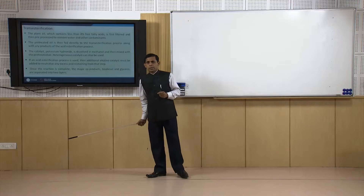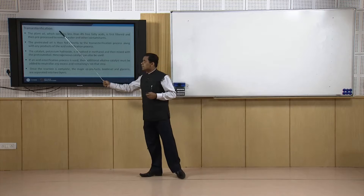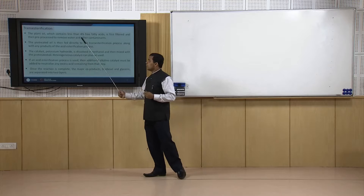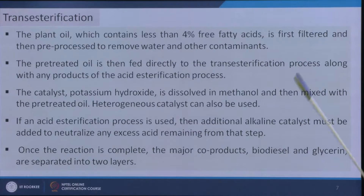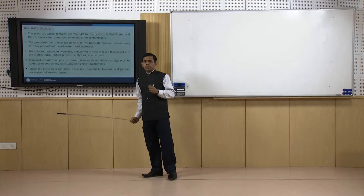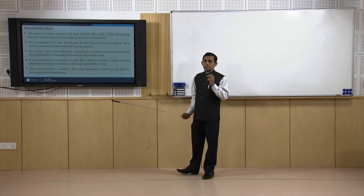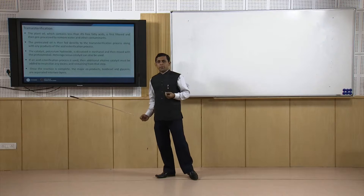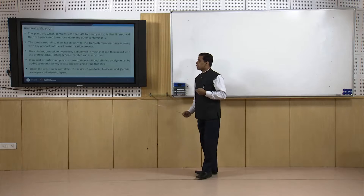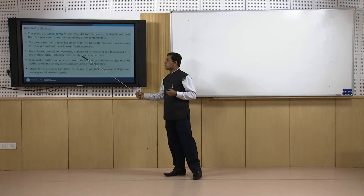Now we will discuss transesterification and understand its importance. This is the reaction through which triglyceride is converted to glycerol and fatty acid esters — alkyl esters of the fatty acids. This is our main reaction for the conversion of bio-oil or other triglyceride-containing organic waste to biodiesel. A catalyst is required; the catalyst may be an acid catalyst or a base catalyst — homogeneous — or a heterogeneous catalyst. Homogeneous base catalysts have better performance but have the major drawback of producing soap, which is not desirable.